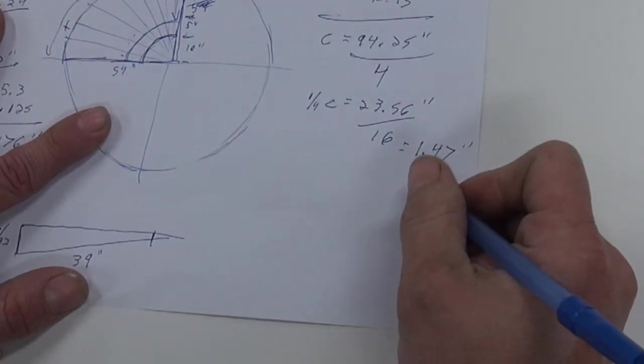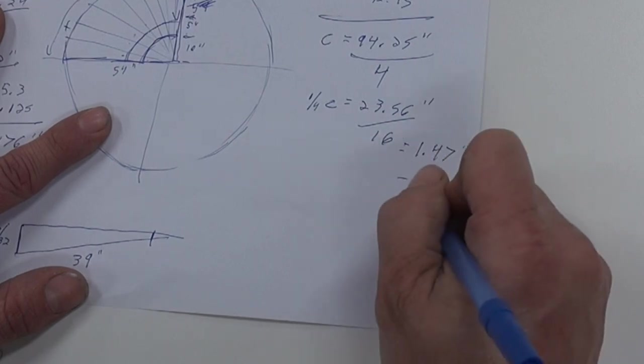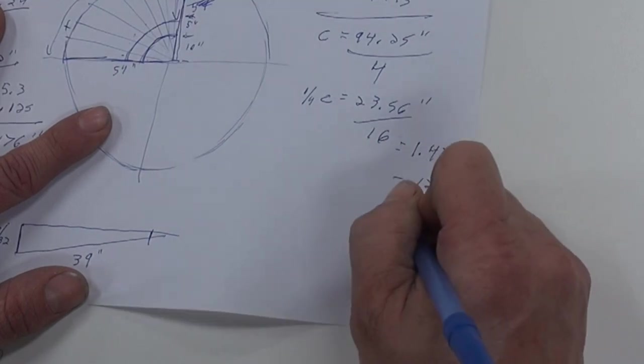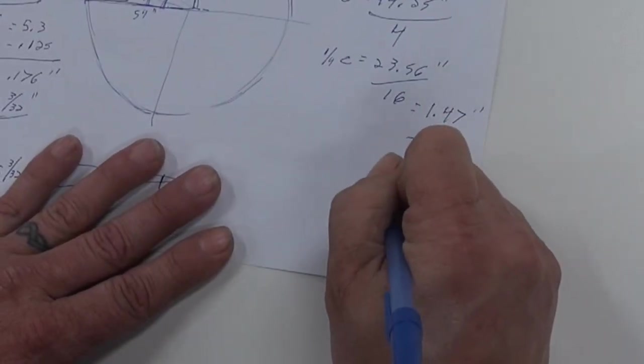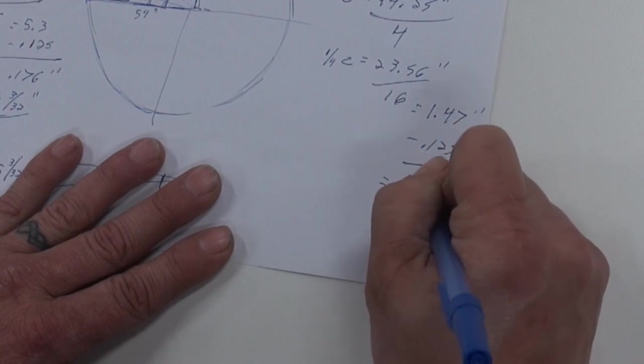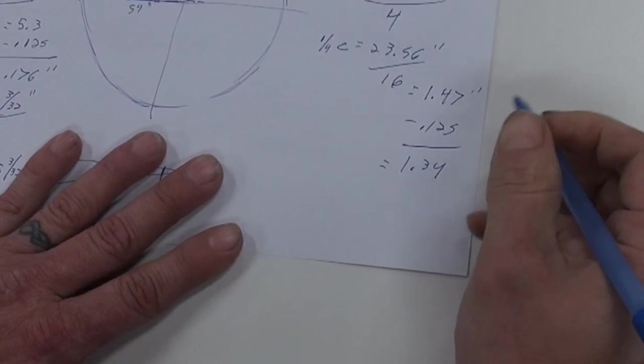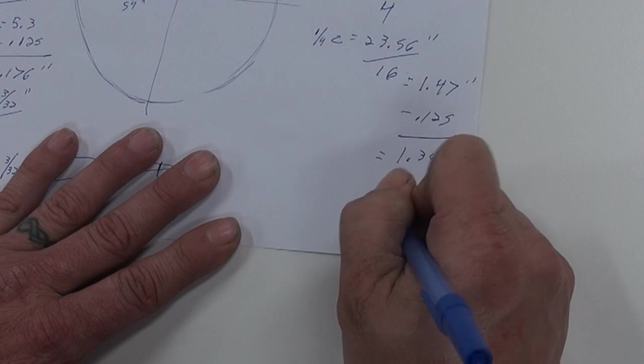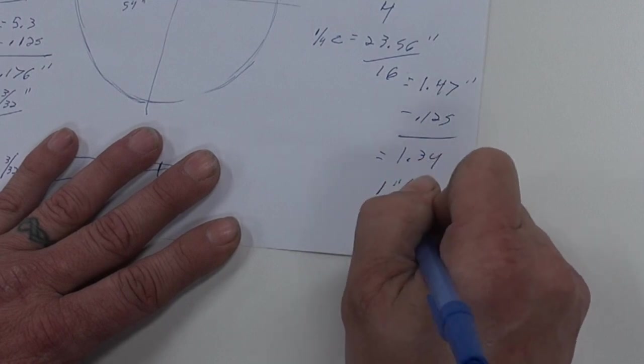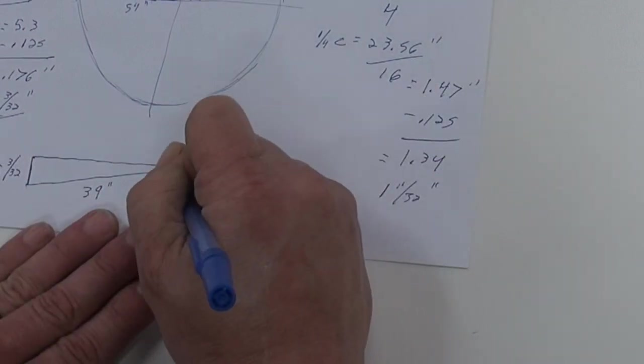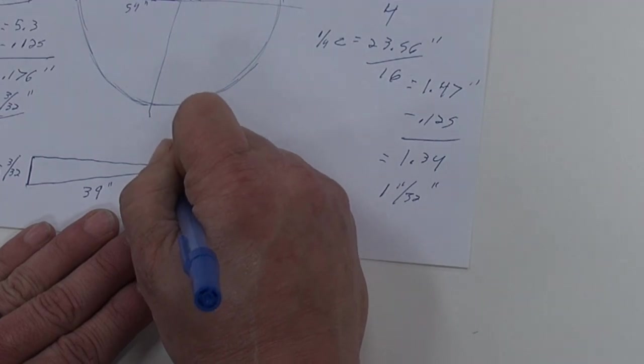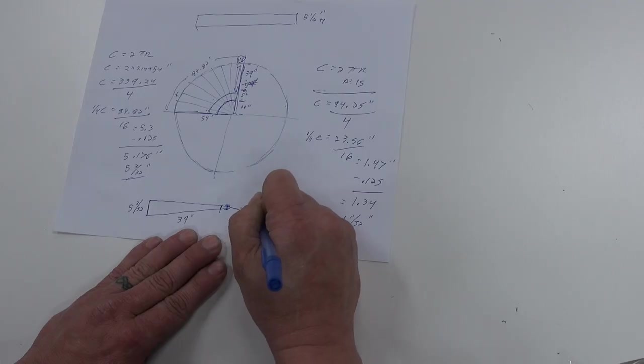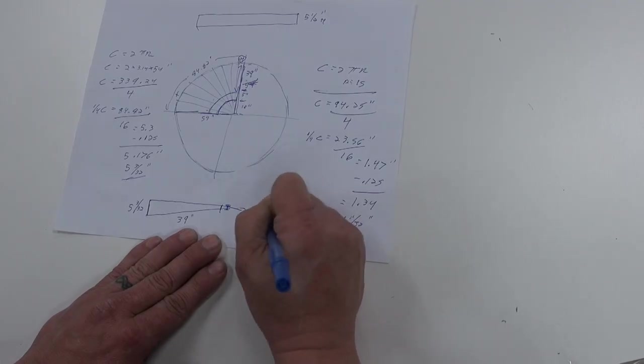Take off the eighth inch reveal minus 0.125. And that equals 1.34, which is 1 and 11 32nd inch. So this dimension here, 1 and 11 32nd inch.